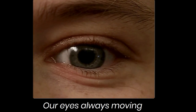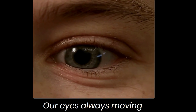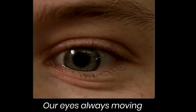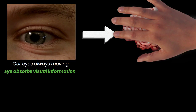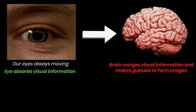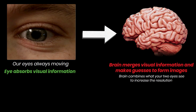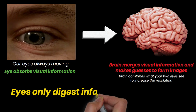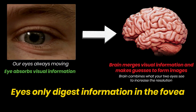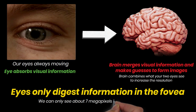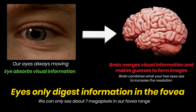According to scientist and photographer Roger M. Clarke at Clarke Vision, a screen would have to have a density of 576 megapixels in order to encompass our entire field of view. Nevertheless, there is a problem with this question because our eyes work differently to cameras. Our eyes move about rapidly, taking in lots of visual information, which then gets processed into detailed images by the brain. The brain combines what your two eyes see to increase the resolution, assembling a higher resolution image than the photoreceptors in the retina can do alone. Our eyes do not digest all visual information equally — we only digest the information in our fovea. Therefore, the image on a 576 megapixel screen would be too detailed for us to interpret. We can see about 7 megapixels in our fovea range, and it has been estimated that the rest of our field of view would only need one megapixel more information to render an image.